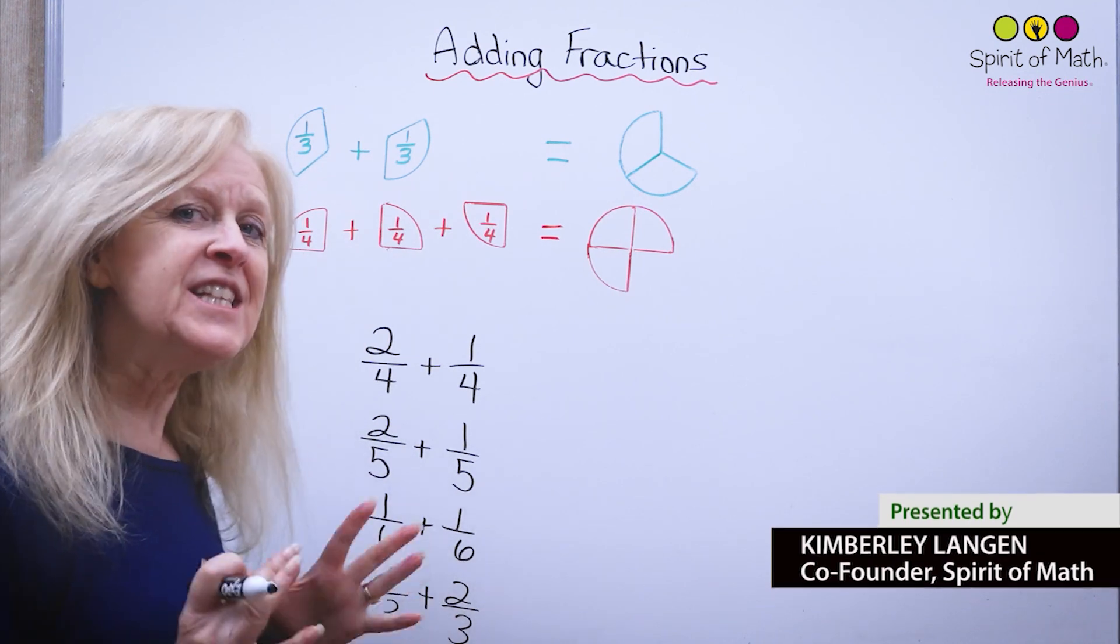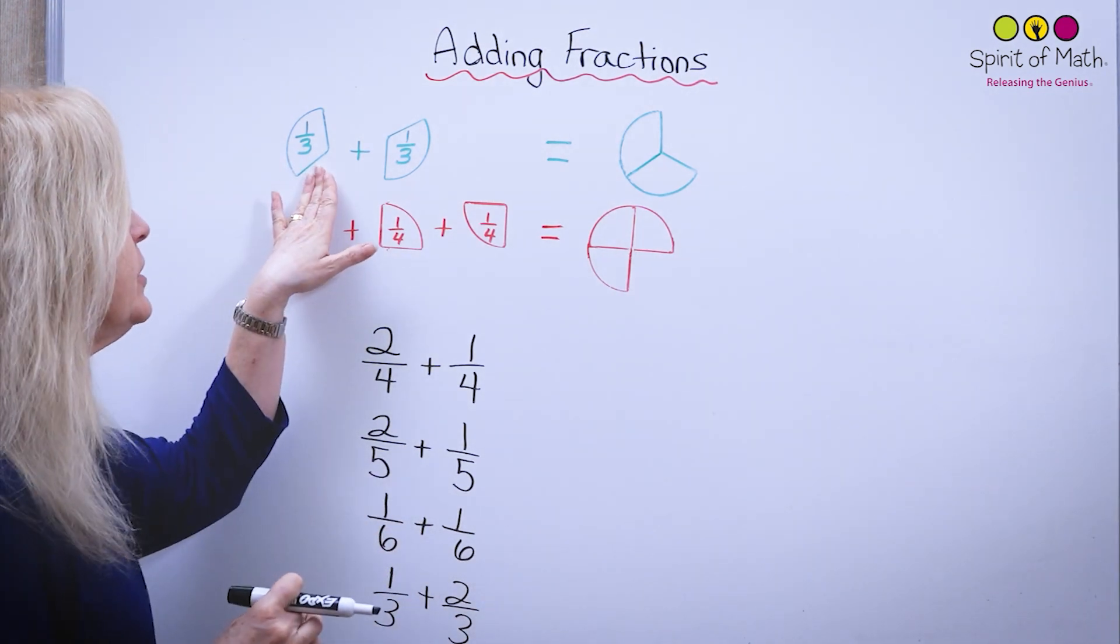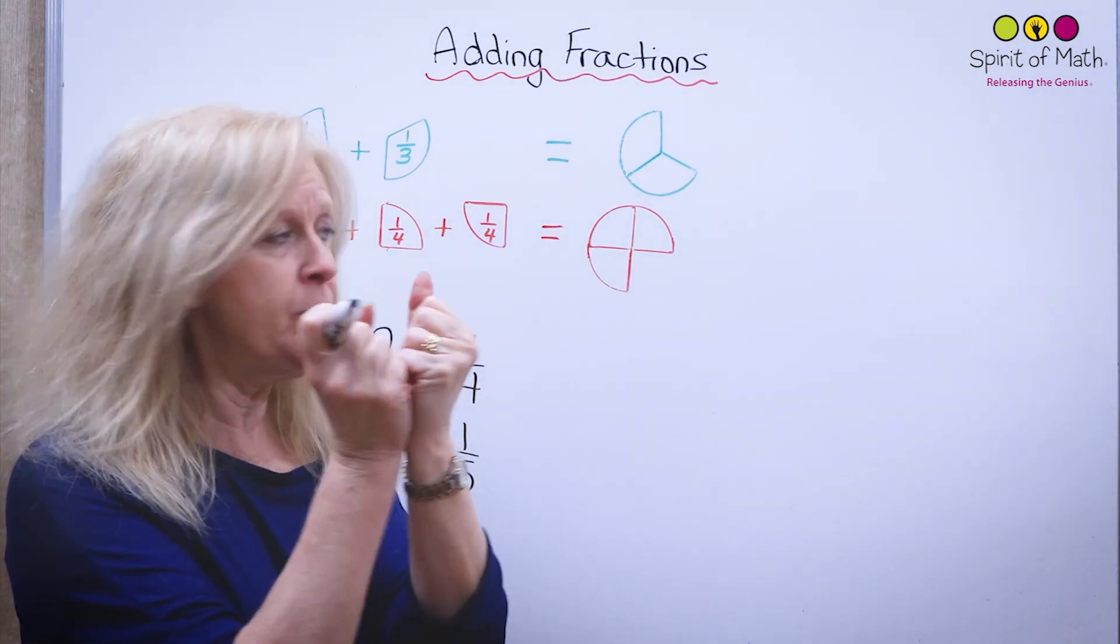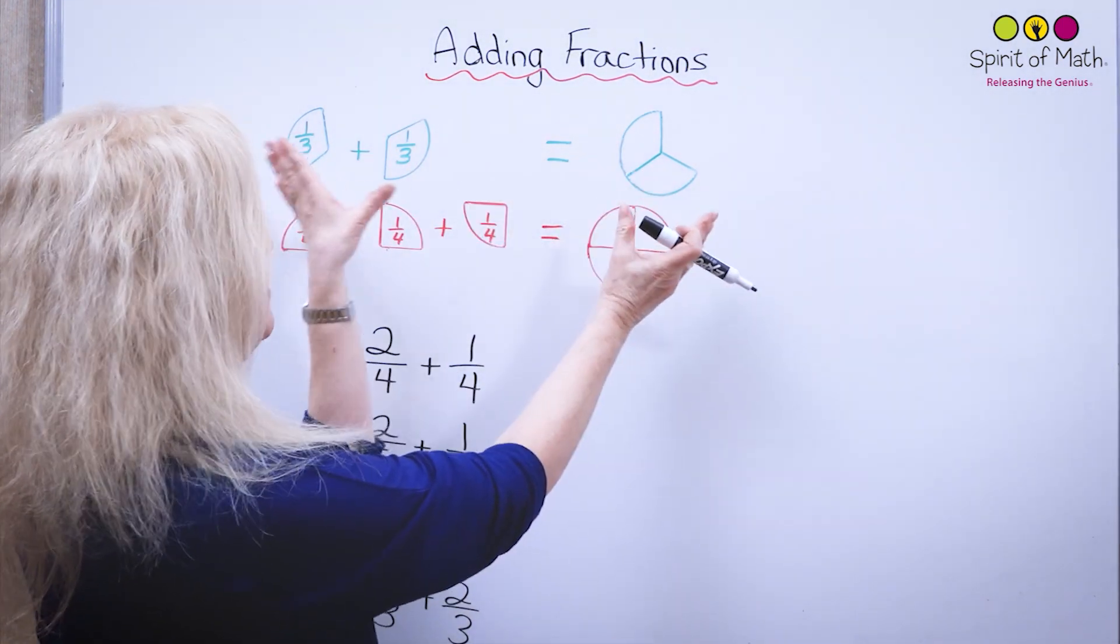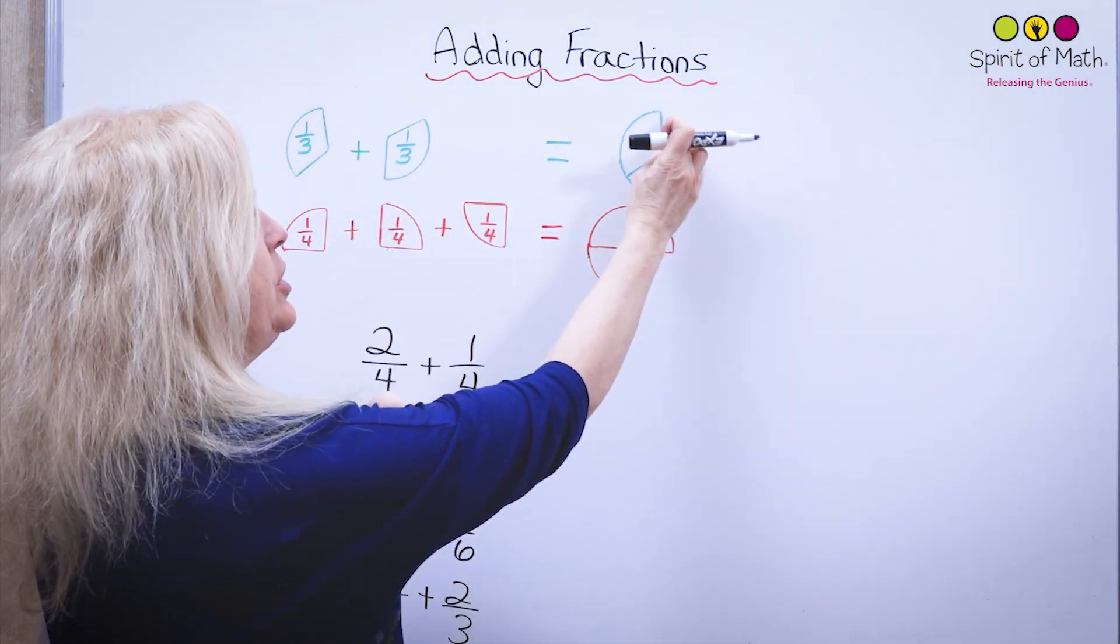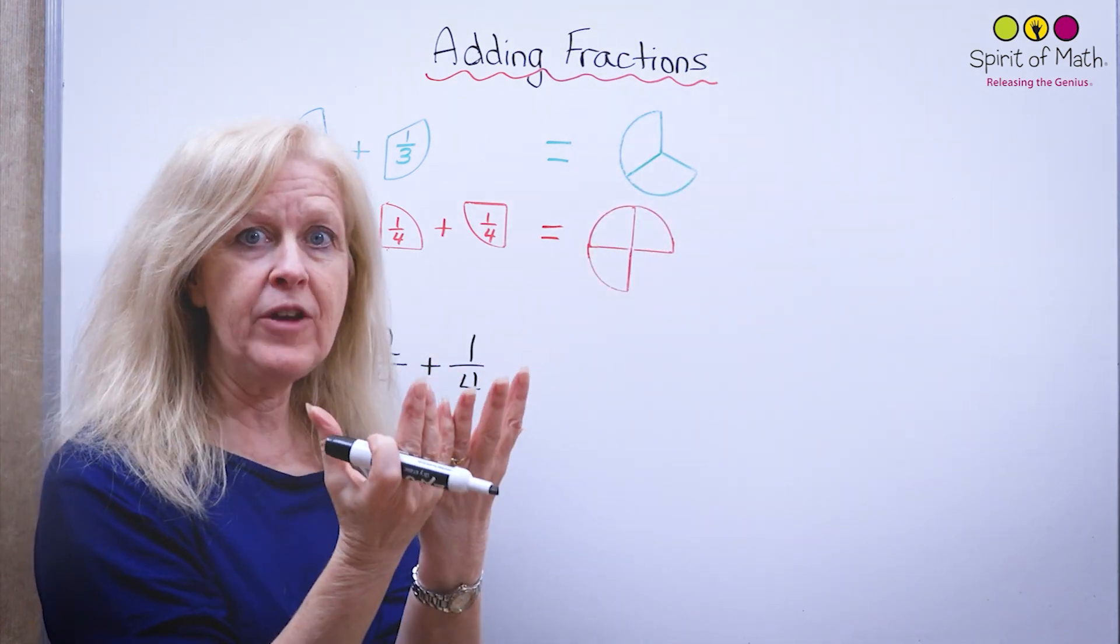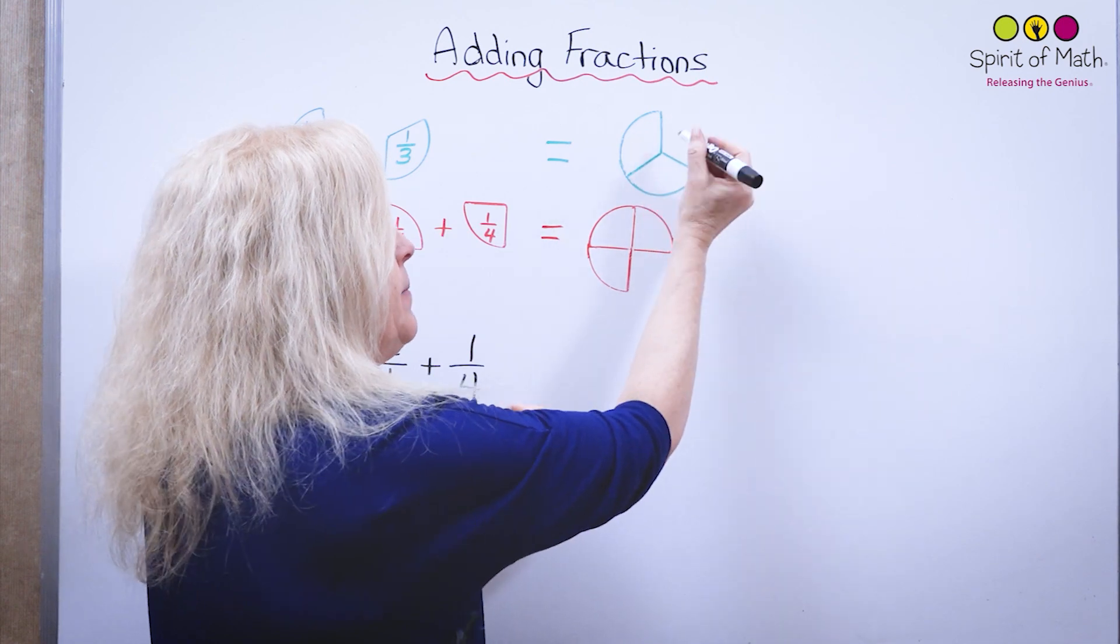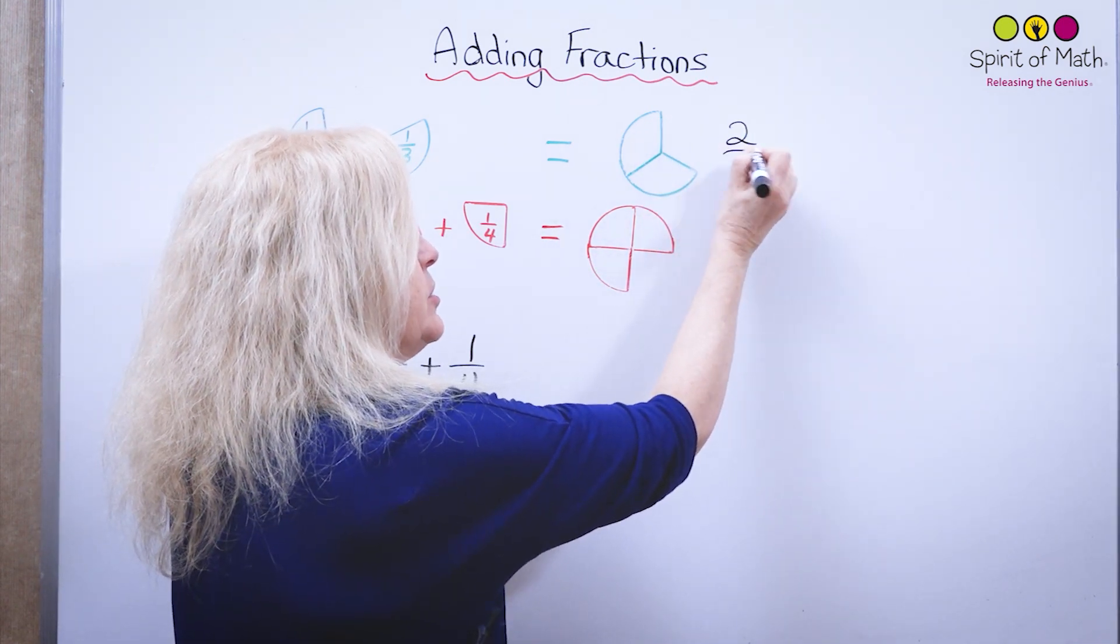Okay, so first let's look at one third, and if you have another third and you add them together, you put them together. I've put them together in a picture so that you can see that the whole, everything together, if you put it together makes what's called two thirds.